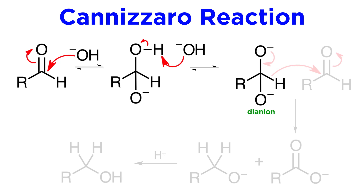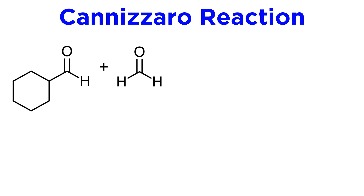We should note that reaction through to the dianion involves the intervention of two hydroxide ions, which explains why the rate equation is partially second order in hydroxide. Now that we understand the mechanism, let's check out some applications.